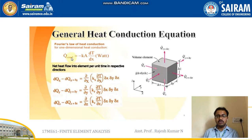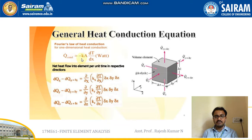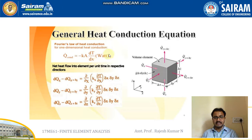We already know that the general heat conduction, with the help of Fourier's law, has been written as minus K·A·dT/dx, where K indicates the thermal conductivity, A is the cross-section area, dT is the temperature differential, and dx is the dimension along the x-axis.